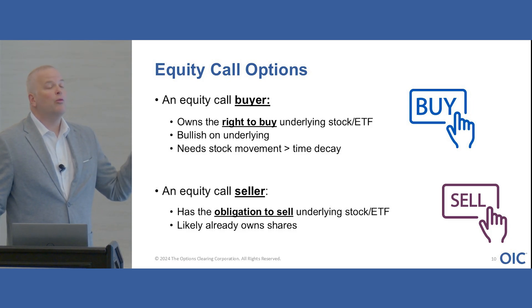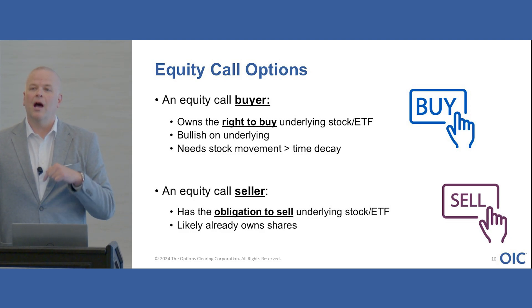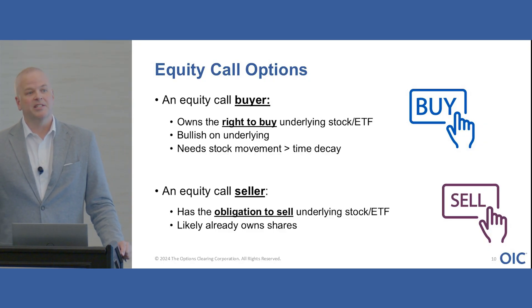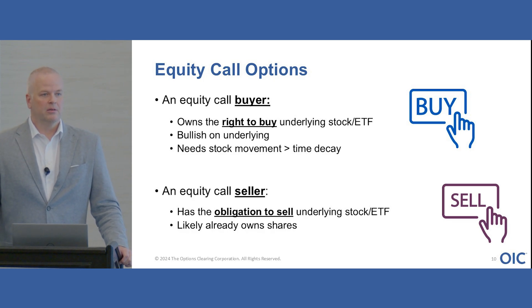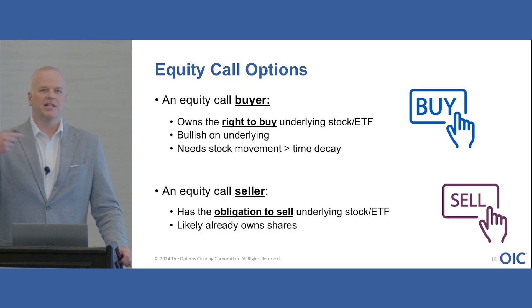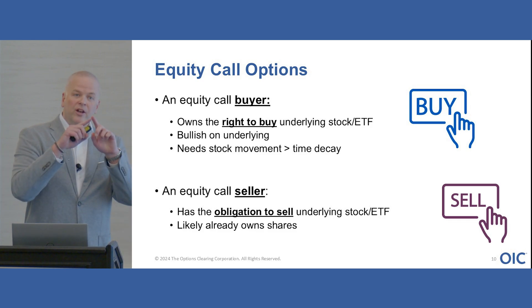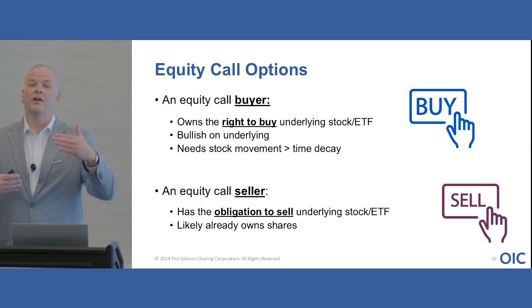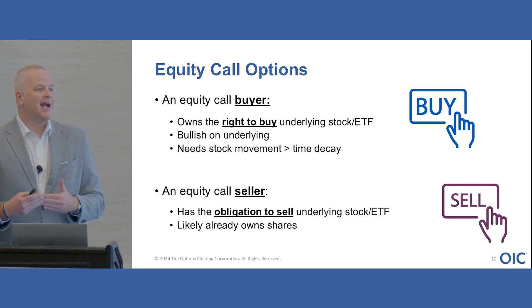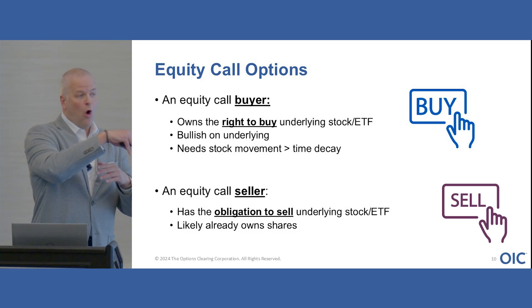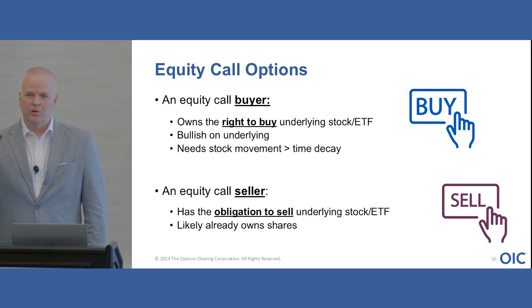If you're a call buyer, you own the right to buy the stock. If you're a call seller, you incur the obligation to sell that underlying stock, ETF, index, or commodity to the person who bought it. OCC is the largest clearing corporation for index and equity options in the United States. When people ask whether exercising a contract means the counterparty sends the stock directly — the answer is not necessarily, because OCC is a centralized clearing facility that becomes the buyer to every seller and the seller to every buyer.